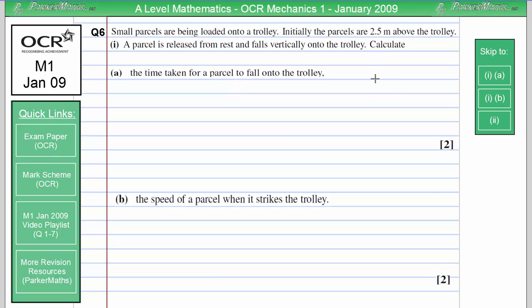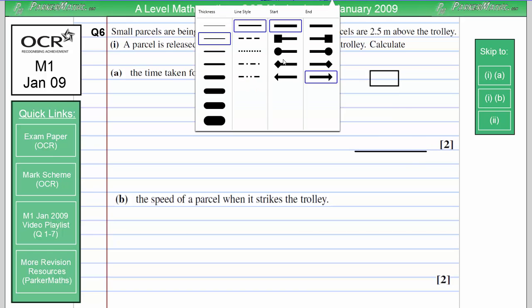As always, let's start by drawing a diagram. Here is our parcel. And it's going to fall 2.5 metres down to the ground here. So we'll label the 2.5 metres.